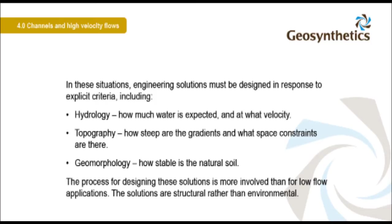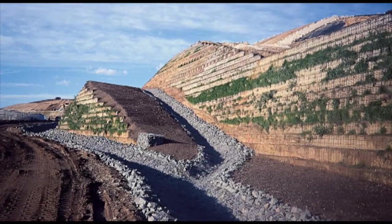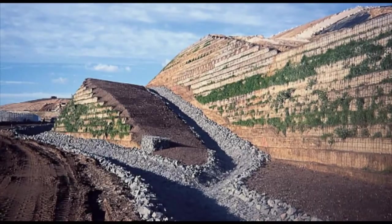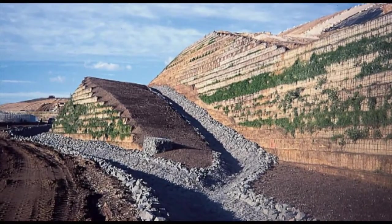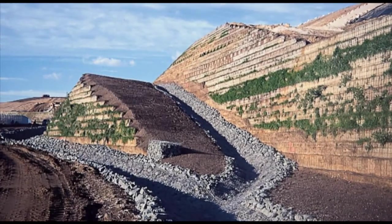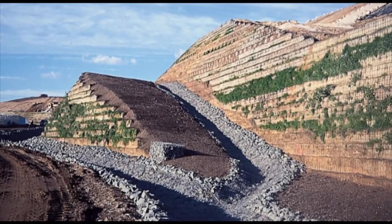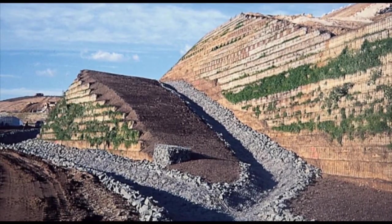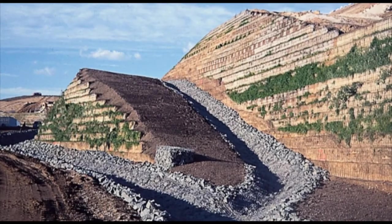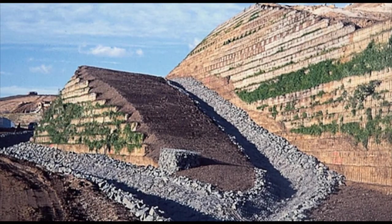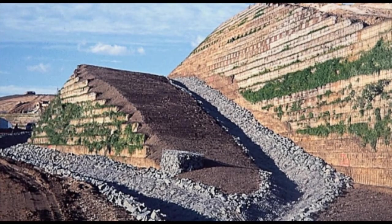The solutions are structural rather than environmental. This is a very large embankment on a mining site. A storm event could significantly alter this landscape, and possibly even cause the embankment to fail. Large drainage channels, to accommodate high flows, will direct flows from the top, around the sides, to the bottom of the structure. This is a common technique used to reduce water ingress to the structure.